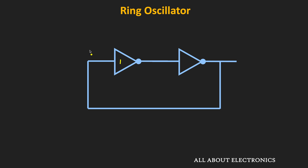Initially, if the input of the first inverter is 0, then the output of the first inverter will be 1. This 1 acts as the input for the second inverter, so the output of the second inverter is 0. The same 0 is fed back to the input side, meaning after the second iteration the output remains 0. Similarly, when the initial input is logic 1, the output will also remain logic 1. So with an even number of inverters, the output latches to a specific state and it won't work as an oscillator.